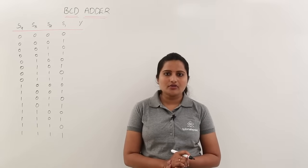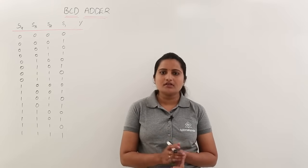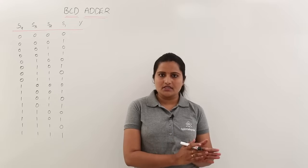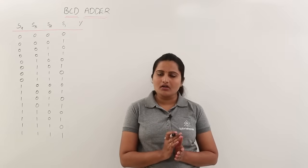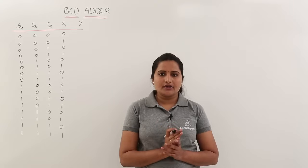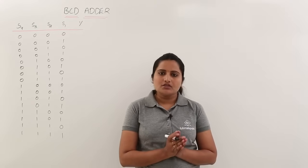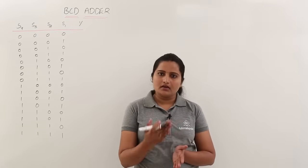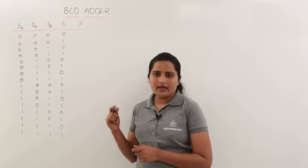In this class we are going to discuss how to design a BCD adder. We are going to design a combinational circuit to perform BCD addition. In BCD addition, if a carry is generated or the sum exceeds 9, we need a correction by adding 6. That is the circuit we need to design first.